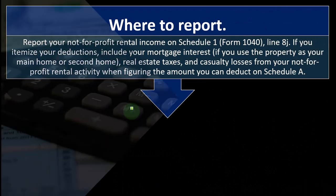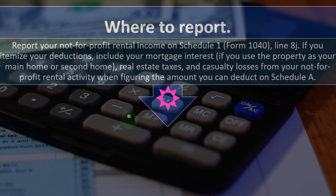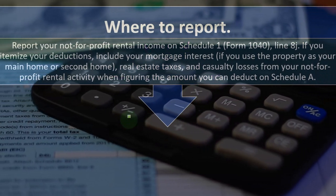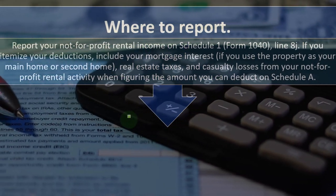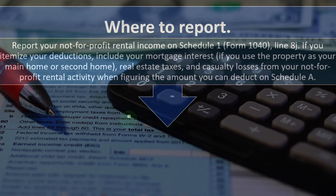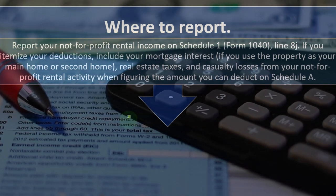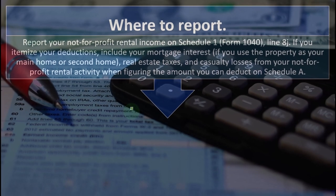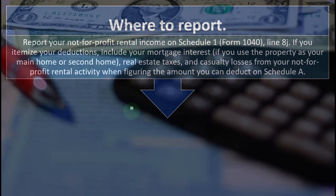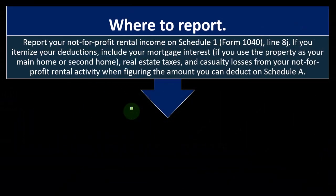Where to report: report your not-for-profit rental income on Schedule 1, Form 1040, Line 8J. If you itemize your deductions, include your mortgage interest — if you use the property as your main home or second home — real estate taxes, and casualty losses from your not-for-profit rental activity when figuring the amount you can deduct on Schedule A.